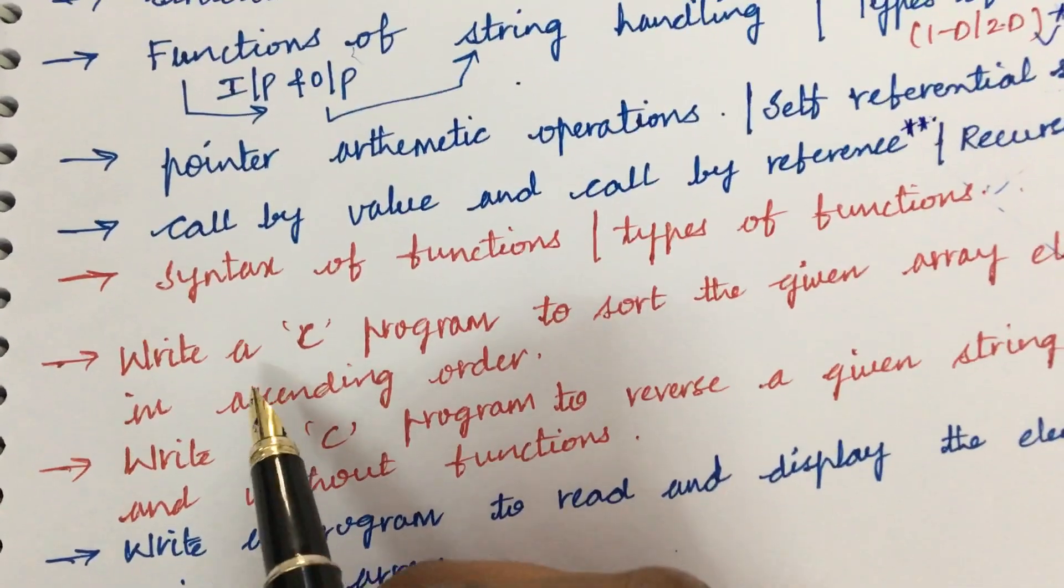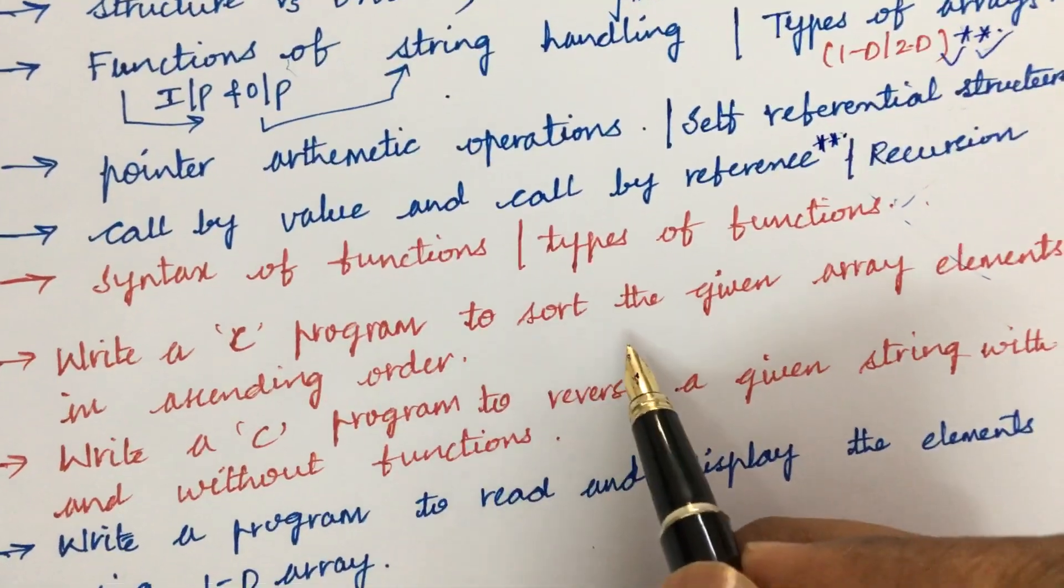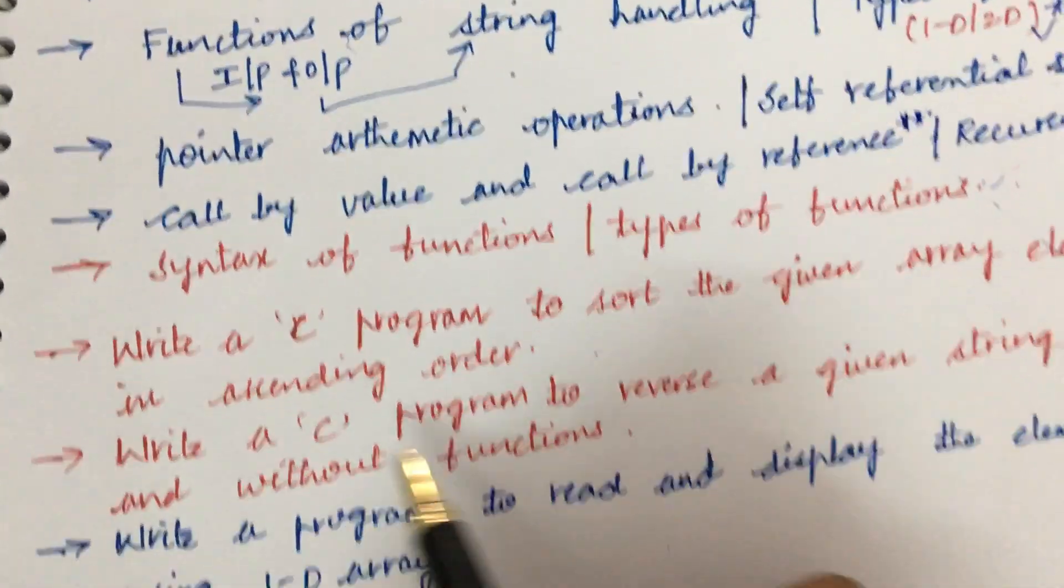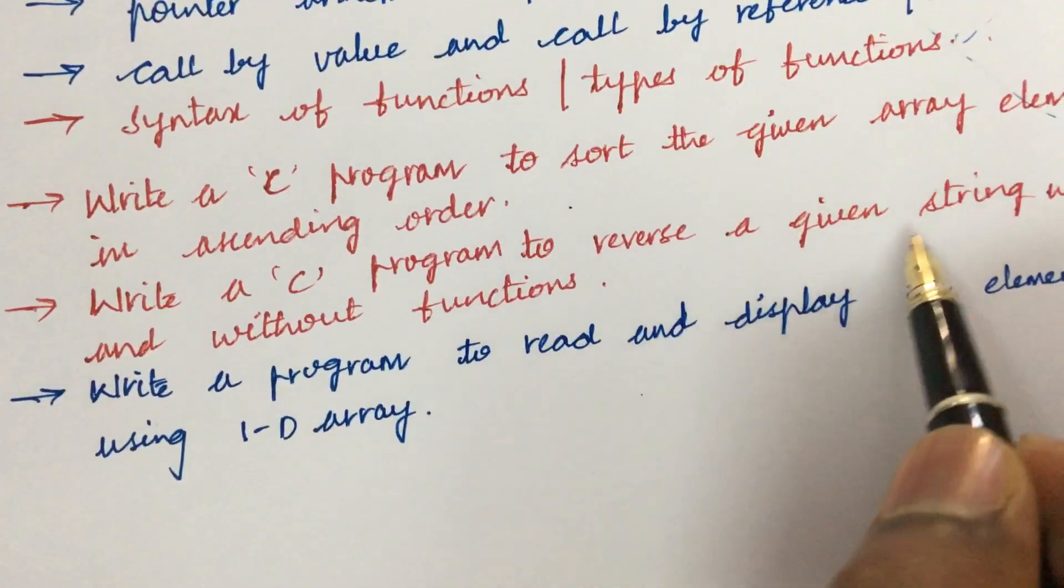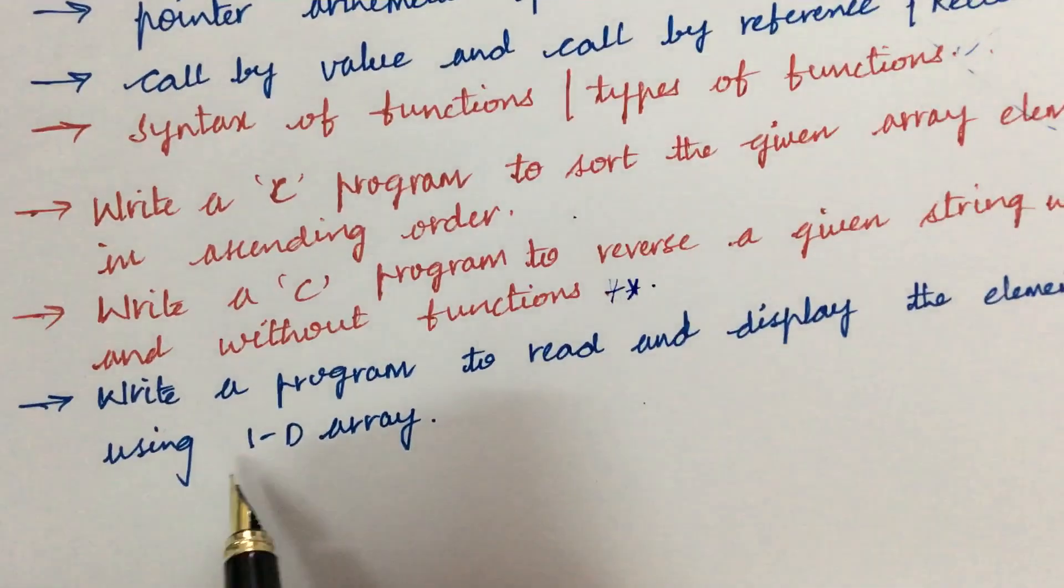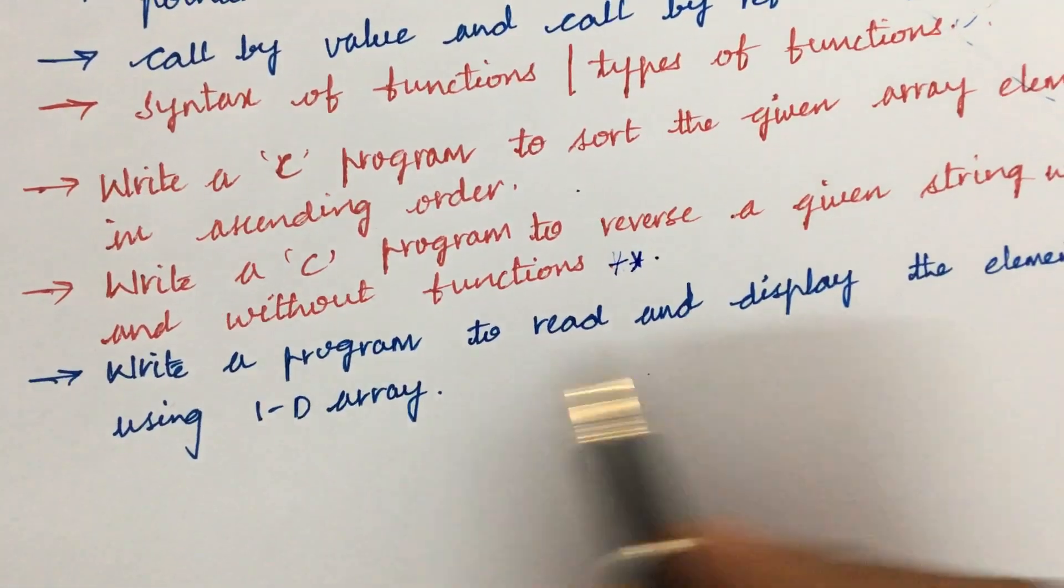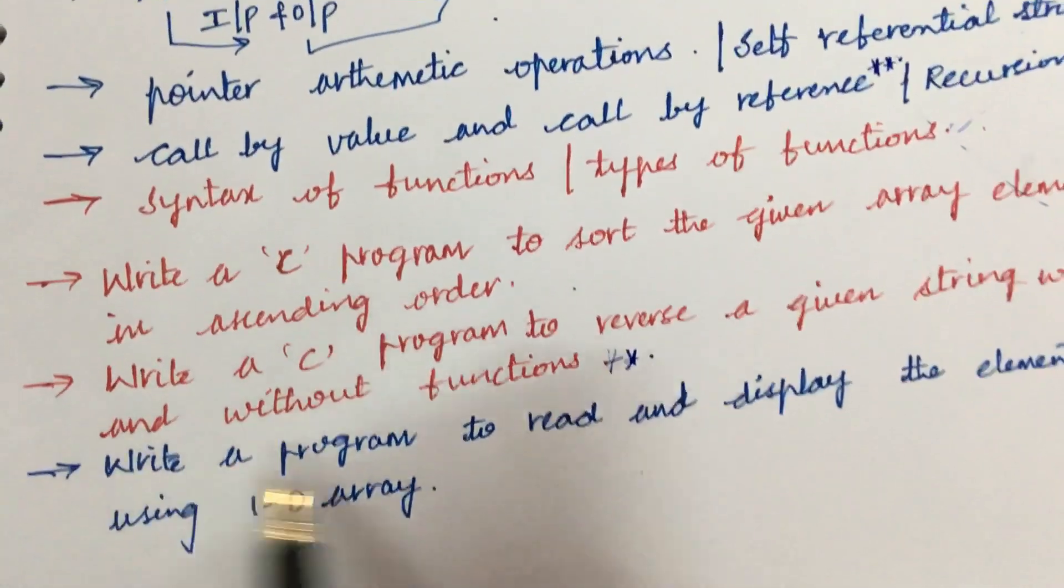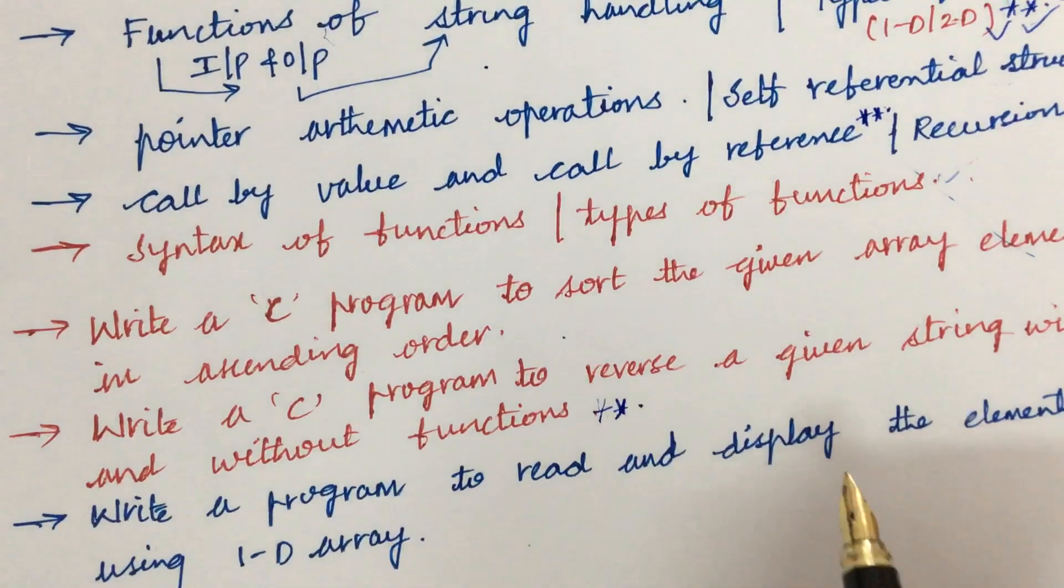Certain programs like write a C program to sort the given array elements in ascending order and write a C program to reverse a given string with and without functions - said to be very important. Write a program to read and display the elements using one-dimensional array. I have taken into consideration only few programs, you are supposed to work out even the other programs also to score a better mark in this subject.